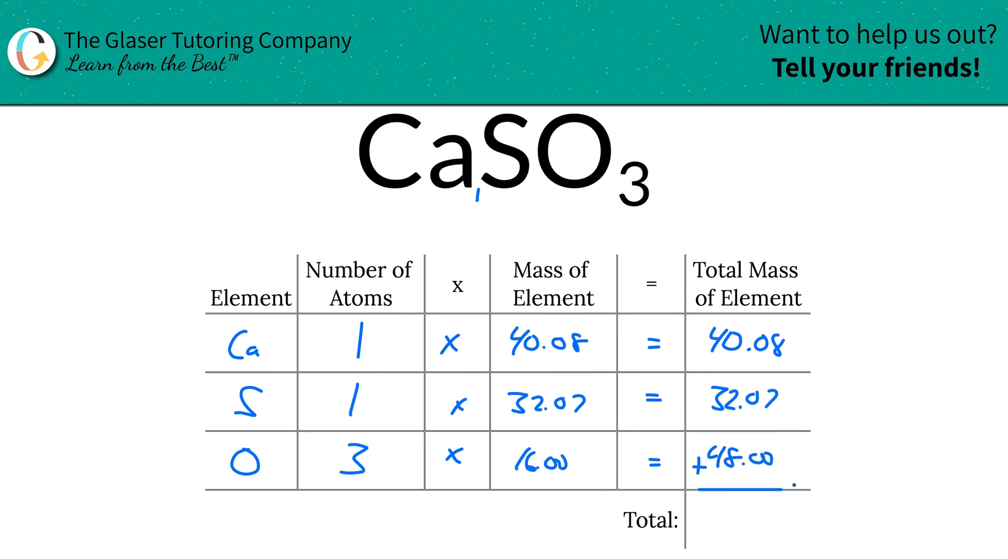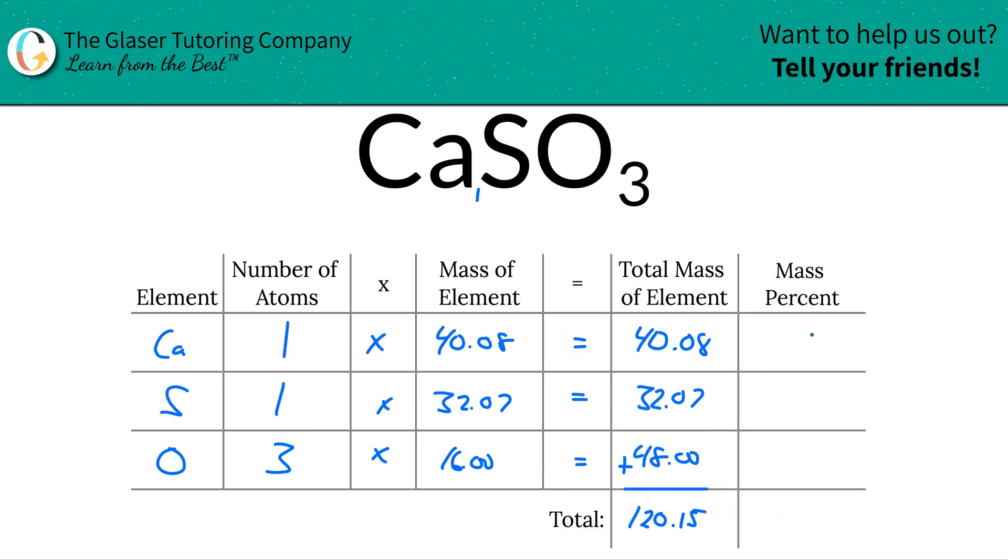And then we're simply going to add them together to find the total mass of the entire compound. So when we do that, it works out to be about 120.15. And this was the first step of finding the percent composition, first finding the total mass. Now I'm going to add one more column to the table.